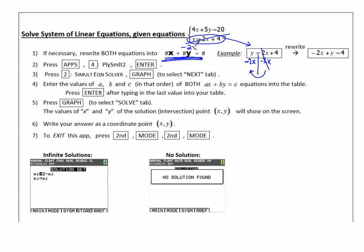-2x + y = 4. And I remember that when I only have y, it means I have 1y.